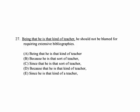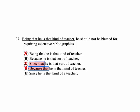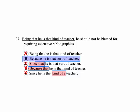Number 27. 'Being that he is that kind of teacher, he should not be blamed for requiring extensive bibliographies.' 'Being that' or 'being as' is not the way to introduce a sentence — you use 'because' or 'since' when explaining a reason. B, C, D, and E all have 'because' or 'since.' We also don't need 'that' after 'because/since,' which leaves us B and E. The second decision is 'kind of a' vs. 'that sort of teacher.' The only choice giving us 'because/since' and 'sort of' is B: 'because he is that sort of teacher.'